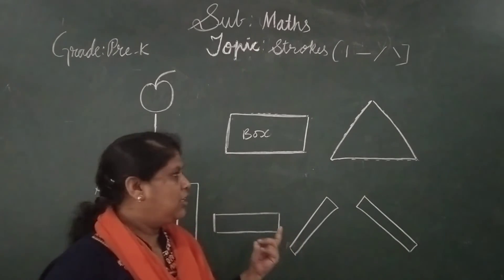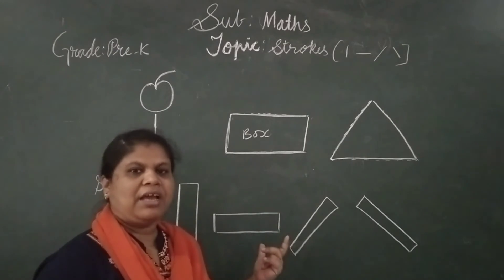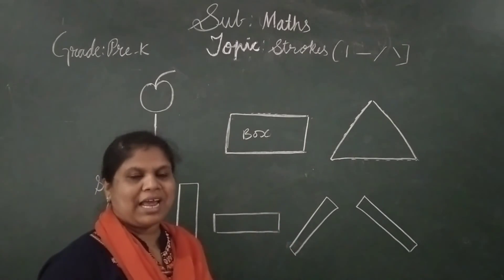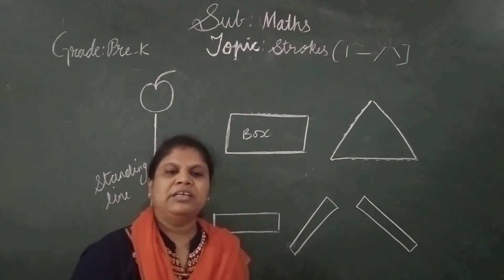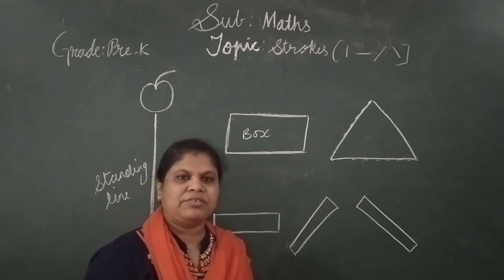Okay, children. You can identify a standing line, a sleeping line, and two slant lines. One left slant line and other right slant line. Ok children, practice this. Thank you.